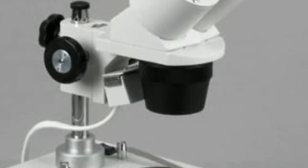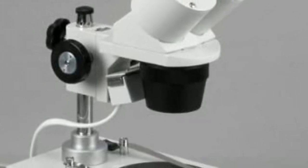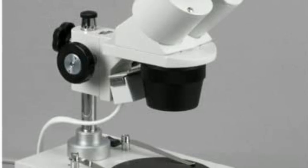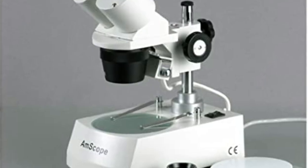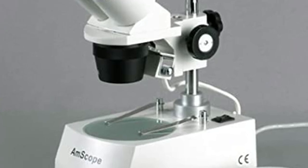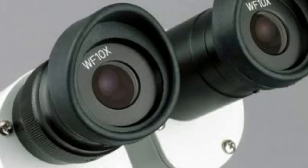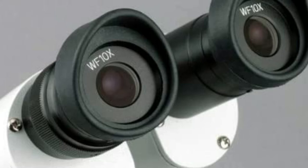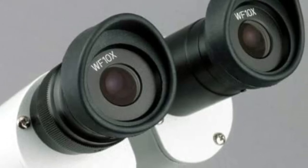The AMSCOPE SE306RPZ forward binocular stereo microscope is ideal for both home and school use. The binocular viewing head of this microscope has an interpupillary range of 55 to 75 millimeters. This allows for the range to be adjusted to the specifications of individual users.